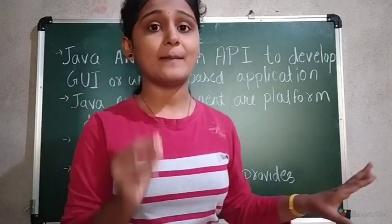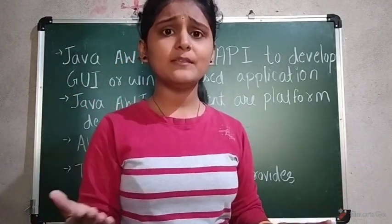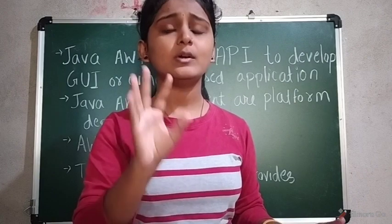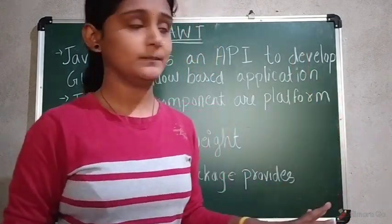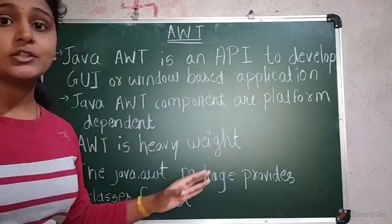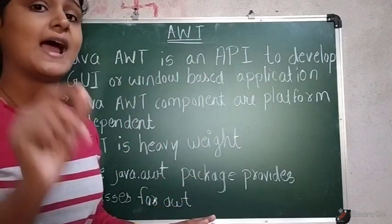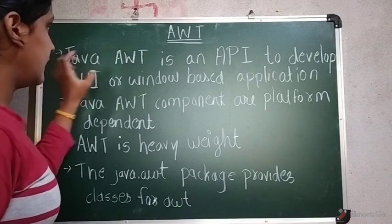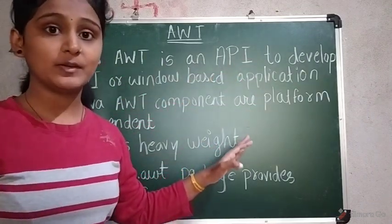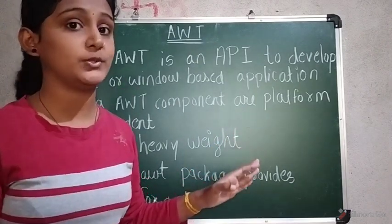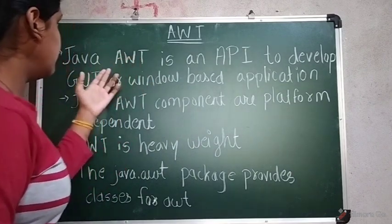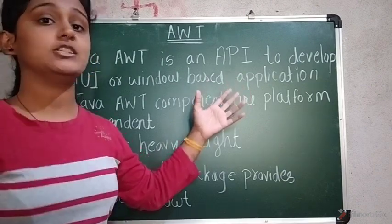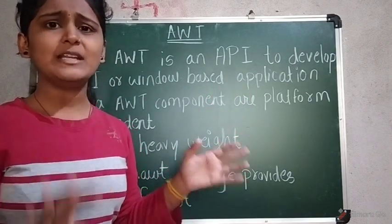In this video we are going to see briefly what exactly is the Abstract Window Toolkit. You may be familiar with AWT from previous Java studies, but let's clarify the concept. AWT stands for Abstract Window Toolkit. Java AWT is an API to develop GUI or window-based applications. Here in advanced Java we are going to create a GUI, which is the graphical user interface, using the java.awt API.